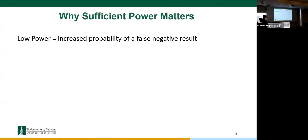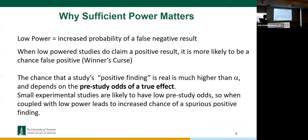If your power is low, you have a higher probability of getting a false negative result. But when a low-power study actually finds a significant result, it's more likely just to be chance or random fluctuation — that's called winner's curse.